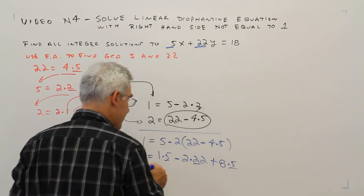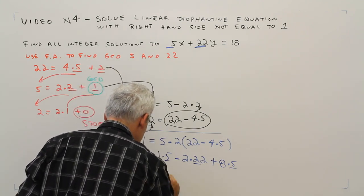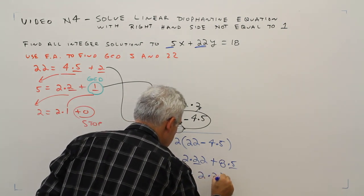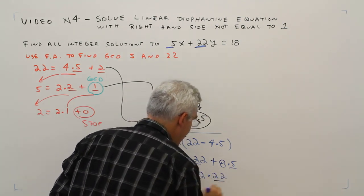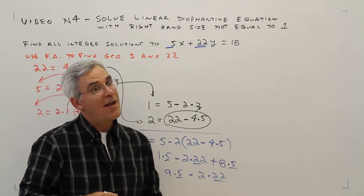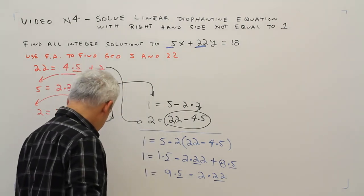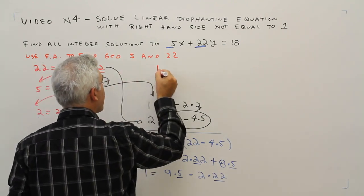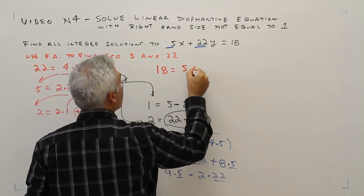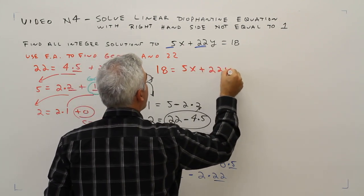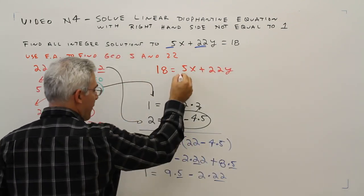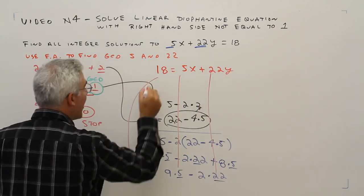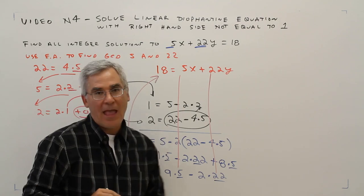So there's my 5, there's my 22. I've got one small problem. If I rewrite the original problem, the original problem is 18 equals 5x plus 22y. I've got my 5s, I've got my 22s. I have a slight problem here: I don't have an 18.